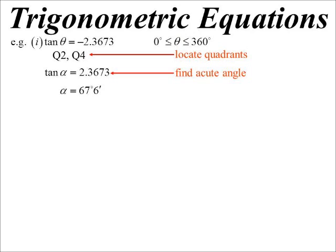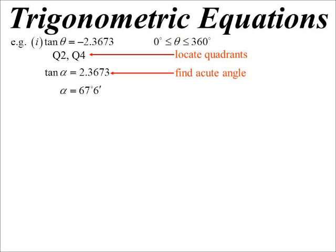So I change the pronumeral because theta is not necessarily acute and in this case actually it wouldn't be acute. So tan alpha = 2.3673, 67 degrees 6. So then I put the two pieces of information together. I've got the acute angle and I've got the quadrants that it's in. So now we can go and solve the problem.